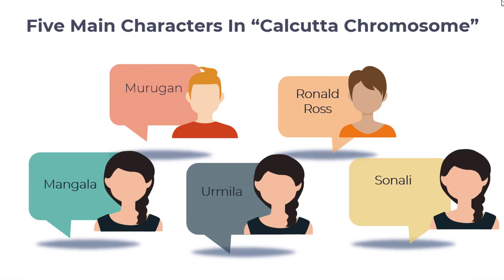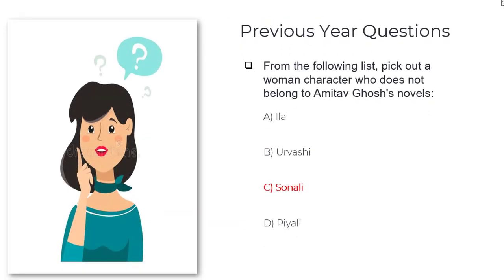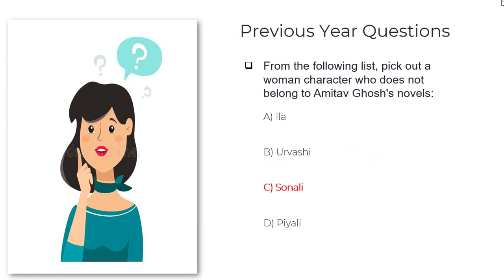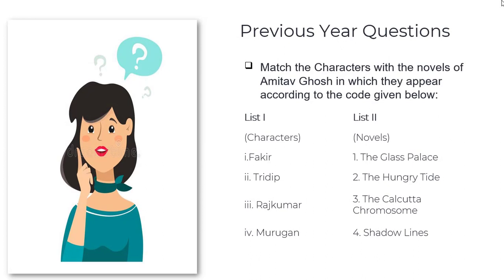In December 2012, the exam question was to pick out a women character who does not belong to an Amitav Ghosh novel from the options: Ila, Urvashi, Sonali, and Piyali. Ila is from The Shadow Lines, Sonali is from The Calcutta Chromosome, and Piyali is from The Hungry Tide. Urvashi is not a character in any of Amitav Ghosh's works — don't confuse Urvashi with Urmila, who is in The Calcutta Chromosome. In June 2012, Murugan was correctly matched with The Calcutta Chromosome.